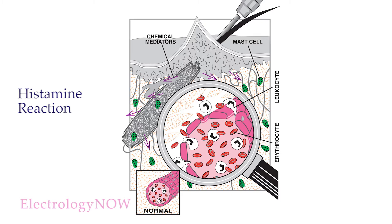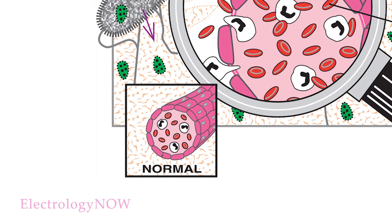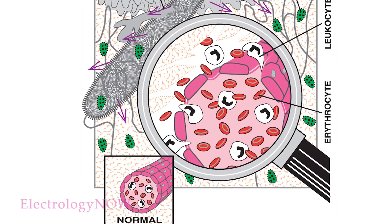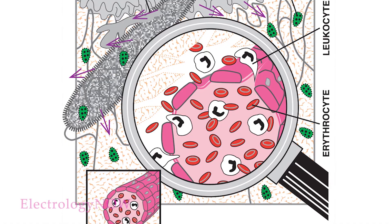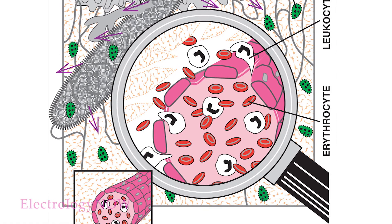The tiny blood vessels increase in diameter and start carrying more blood to the area. Look at the bottom of the illustration — this is a normal blood vessel. Now notice the dilated blood vessel in the magnifying glass. This is how a blood vessel reacts to histamine. The blood vessel carries more blood, and consequently the vessel wall is stretched. In this way, the vessel becomes permeable. So now erythrocytes, leukocytes, plasma, and other blood factors leak out into the wounded area.